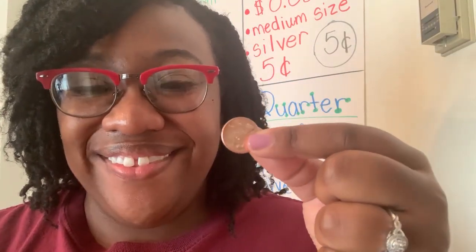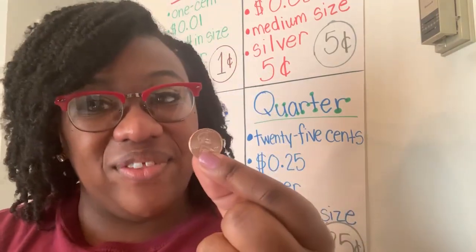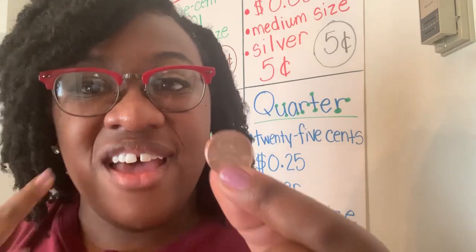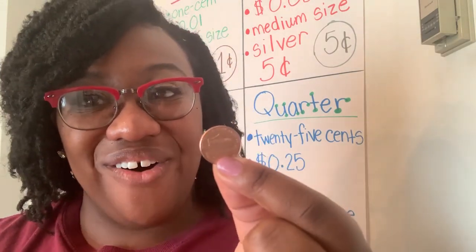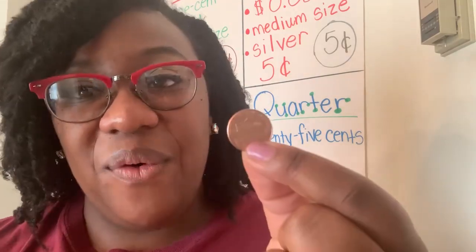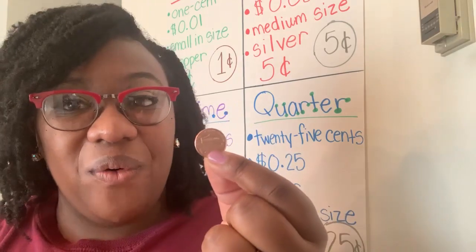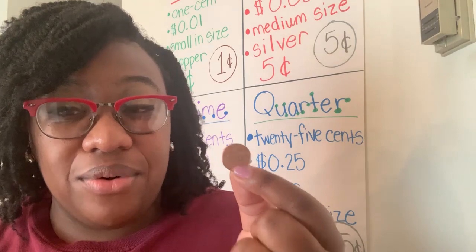All righty guys, let's look at each coin. Each of our coins has a head — on the head side of the coin is a picture of a U.S. president, so you can see their face. And when we flip our coin over, we have the tail. On the tail of the coin, we have pictures of U.S. trademarks, U.S. landmarks, and U.S. symbols.